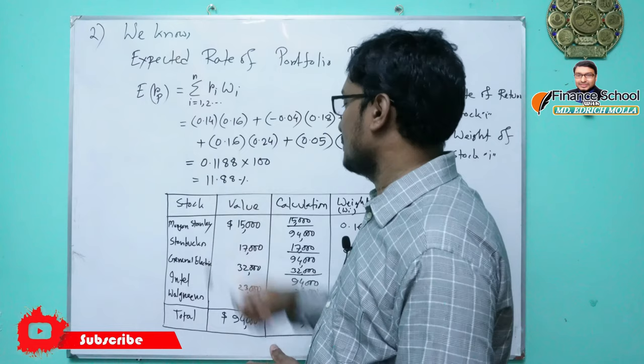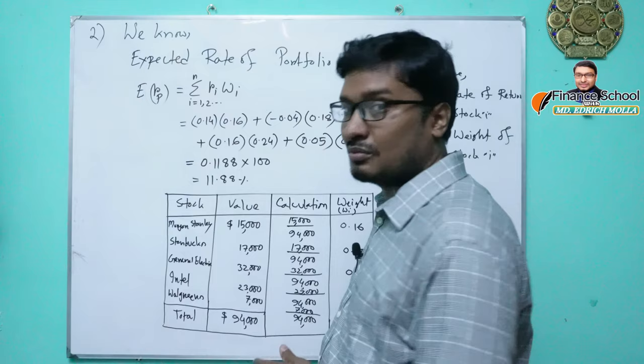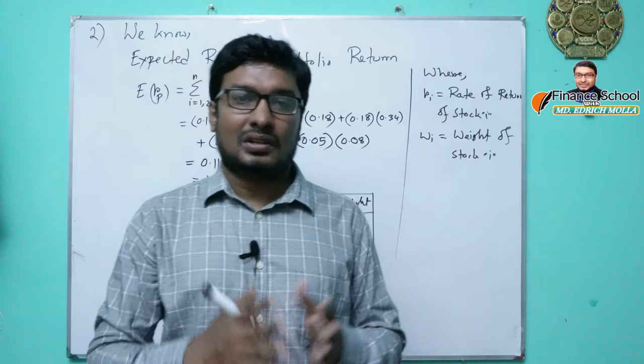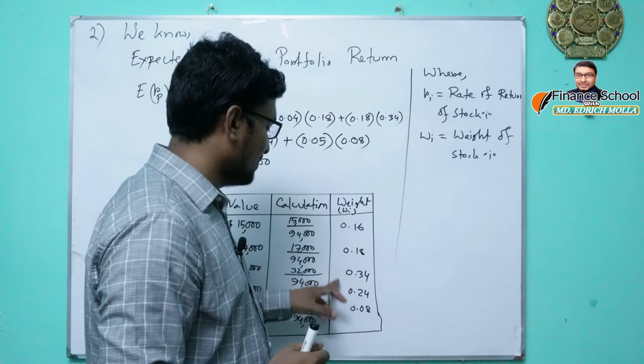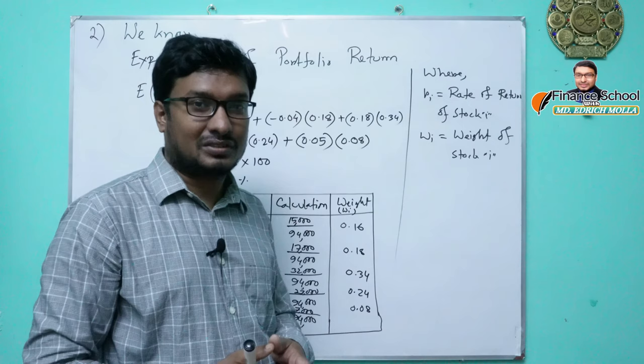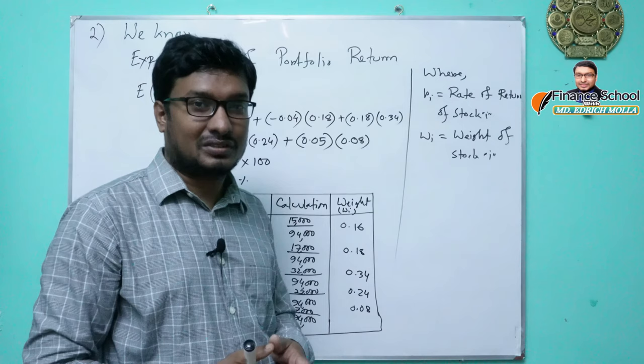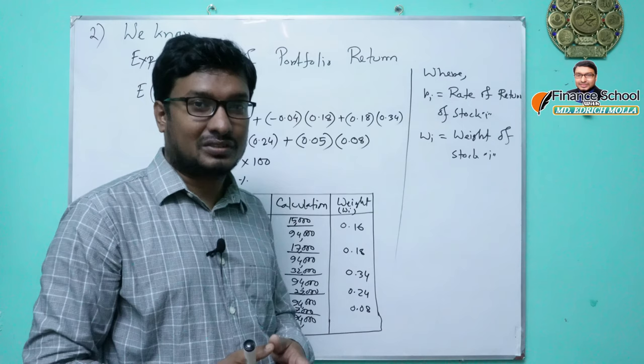You have now learned how to find the portfolio return using this equation. One important thing to remember: before inputting values into the equation, always find the weights first. Also keep in mind that the sum of all weights must always equal 1, meaning 100% of the capital — here $94,000 — is fully accounted for. I hope you have understood how to find the expected rate of portfolio return.